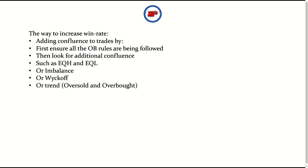Making sure your order block follows all the rules is the most important thing when trading an order block strategy. You want to make sure all the rules are being followed as this will minimize your chances of getting stopped out. Specifically: make sure there's a break of structure, your order block isn't mitigated or been tapped into, and there's high volume at the order block.